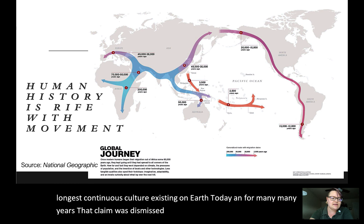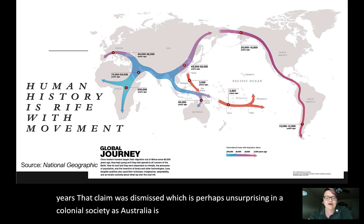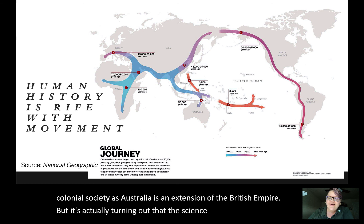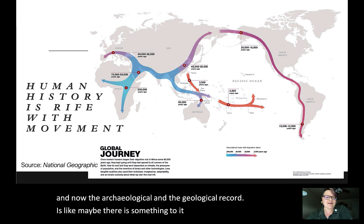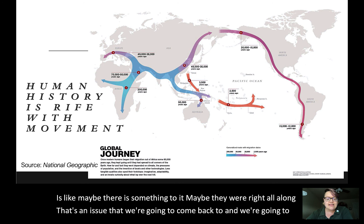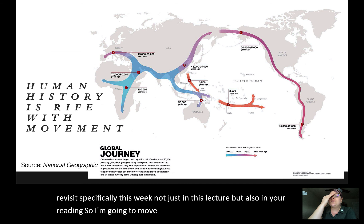This is really significant because Aboriginal Australian culture has long claimed to be the longest continuous culture on Earth. For many years that claim was dismissed — unsurprisingly in a colonial society, as Australia is an extension of the British empire — but science is actually turning out to support that claim. The archaeological and geological record is increasingly saying that maybe they were right all along. We'll come back to this in the reading this week.